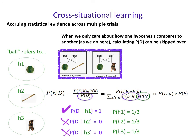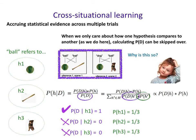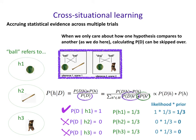When we only care about how one hypothesis compares to another — just which one is most likely — you can usually skip the normalization step. That's where you'll see the proportional symbol, which looks like a sideways partial infinity sign, meaning you're skipping that normalization. Looking at likelihood times prior for each hypothesis: for hypothesis one it's one times one-third, giving one-third. For hypotheses two and three, it's zero times one-third, giving zero, because they're not compatible with the data.